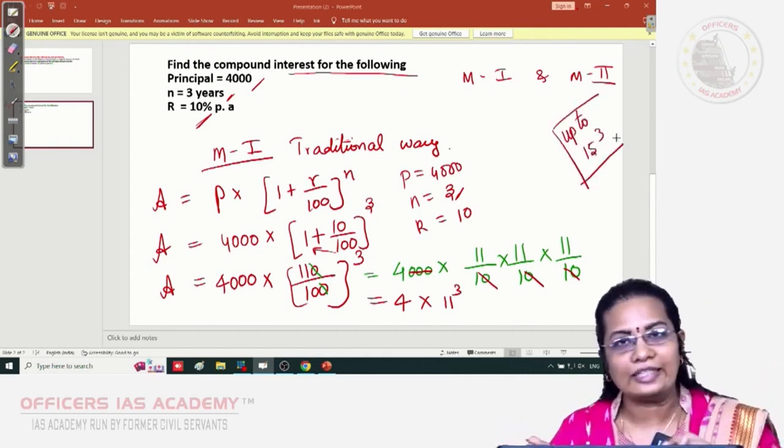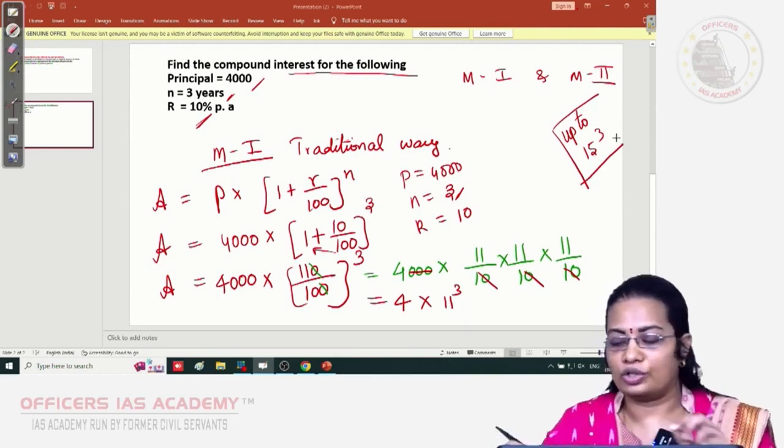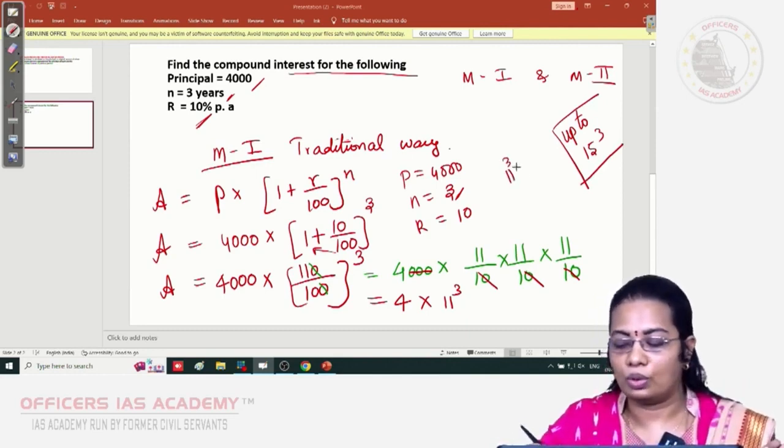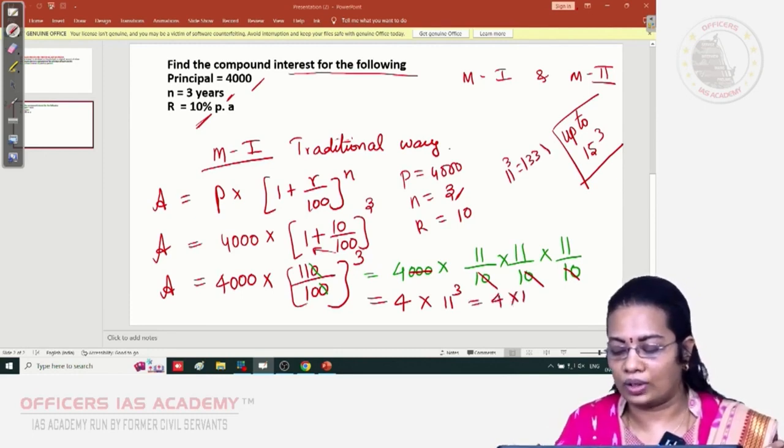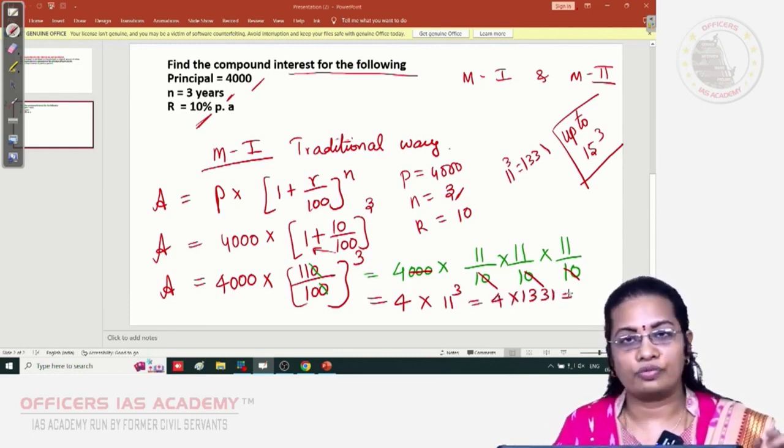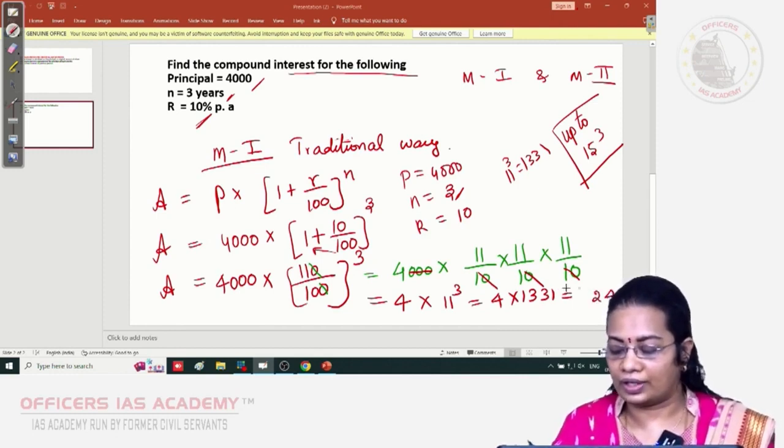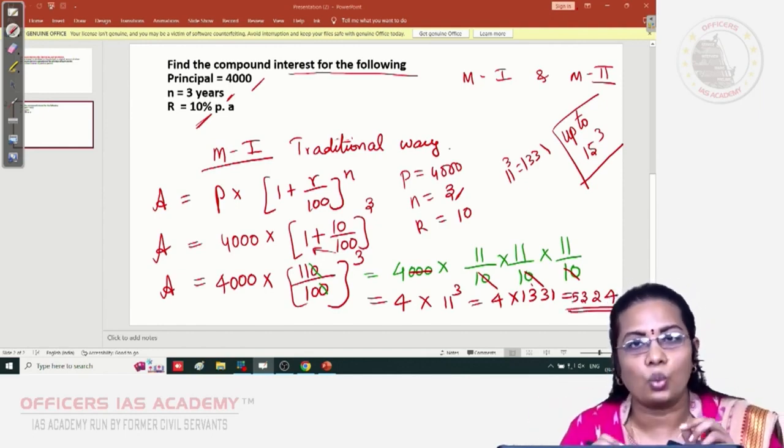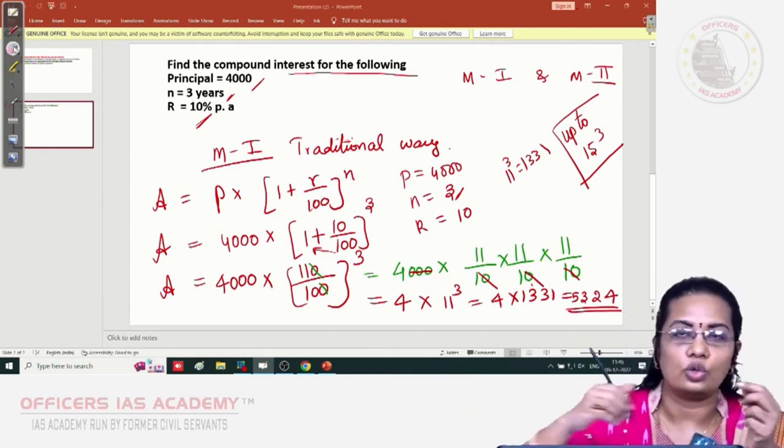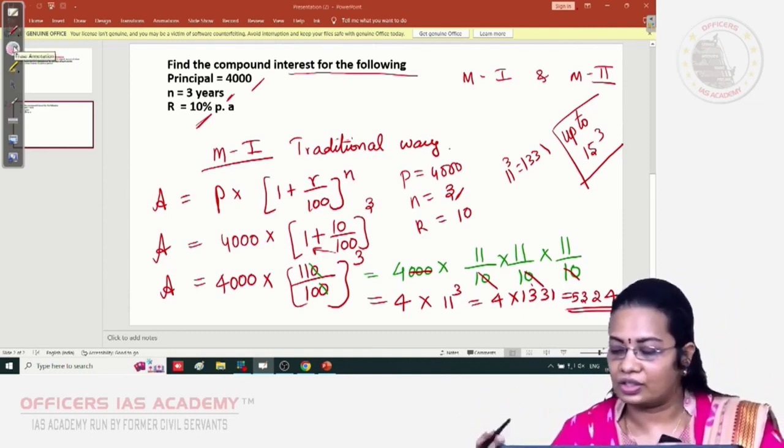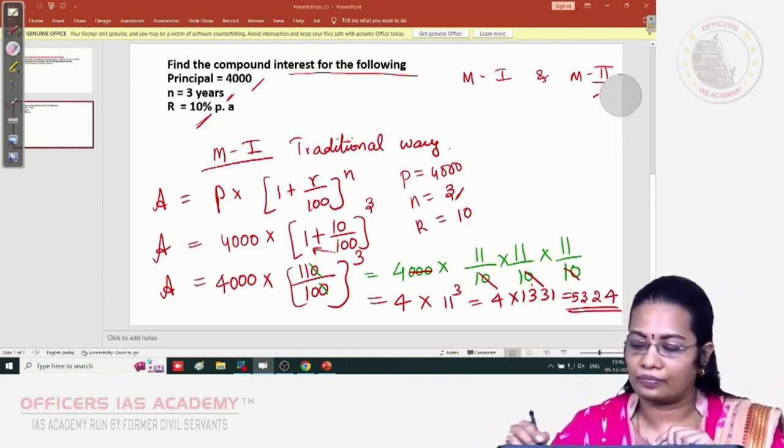Otherwise you want to multiply 11 × 11 × 11. If you know 11³ = 1,331, directly take 4 × 1,331. So finally the result will become 5,324. This is the way you will be finding under the formula method.